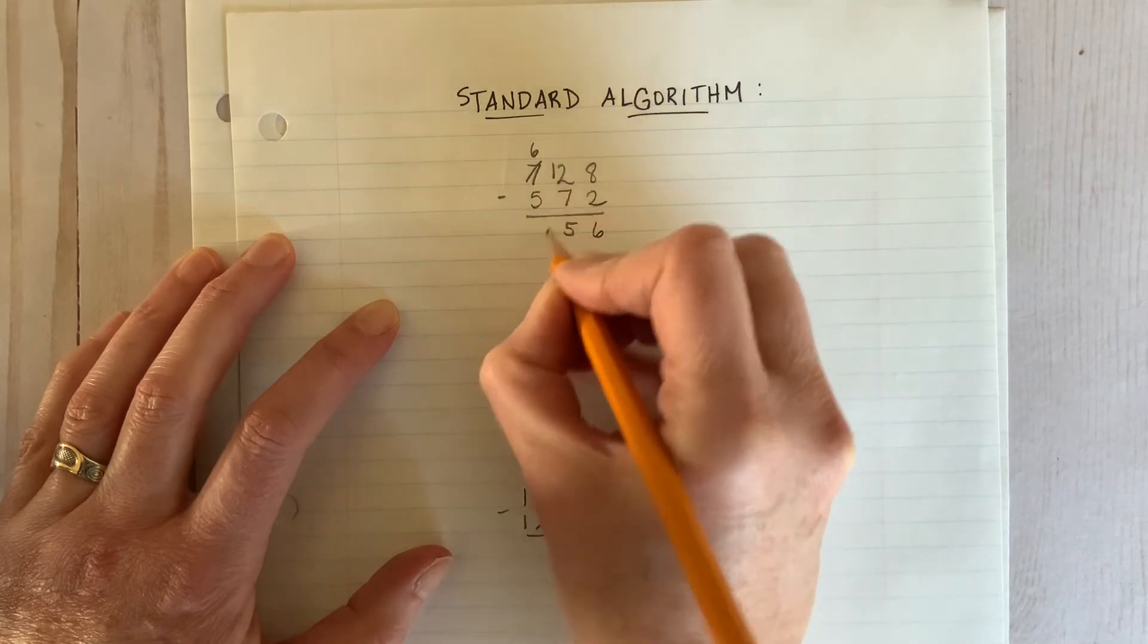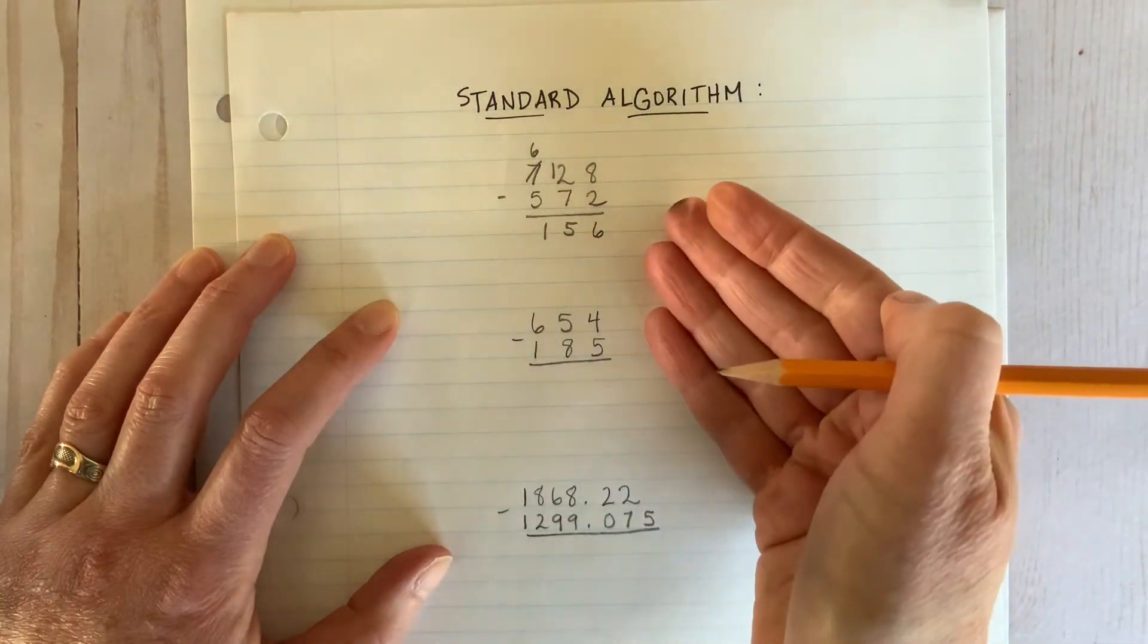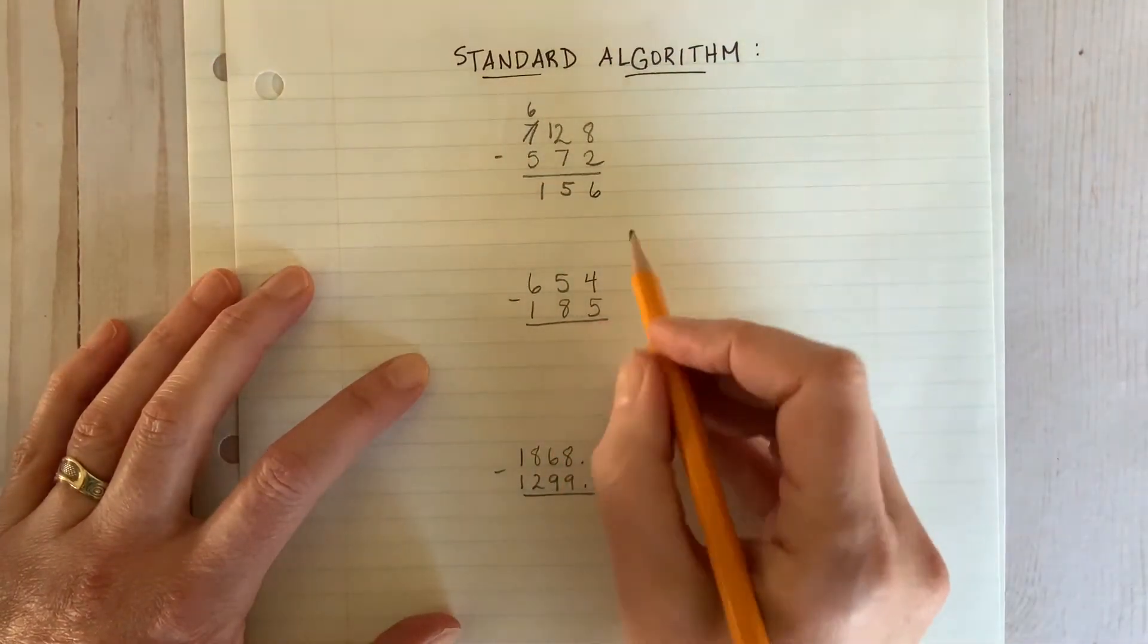If they have learned the partial differences method first, they will better understand why the borrowing tricks for the standard algorithm work the way they do, and will be less likely to make mistakes, like this one.